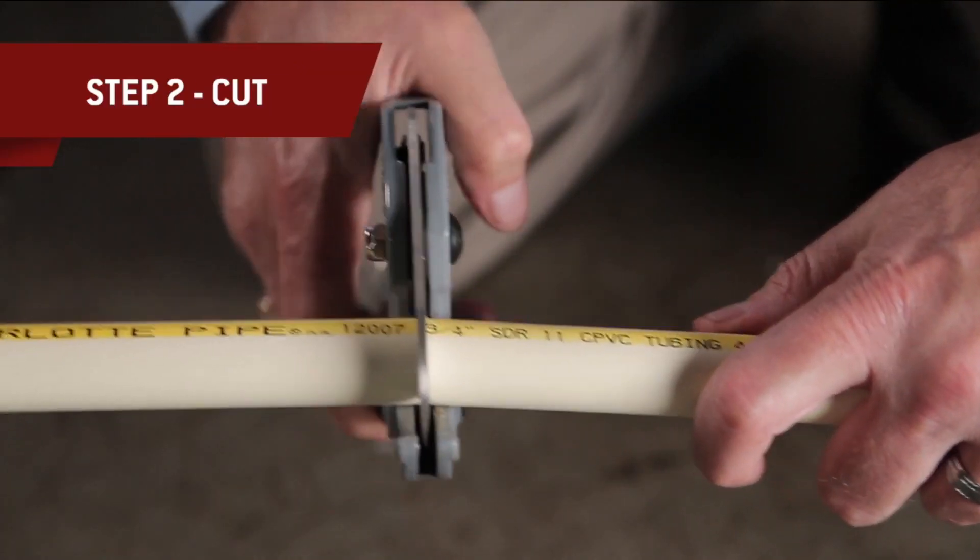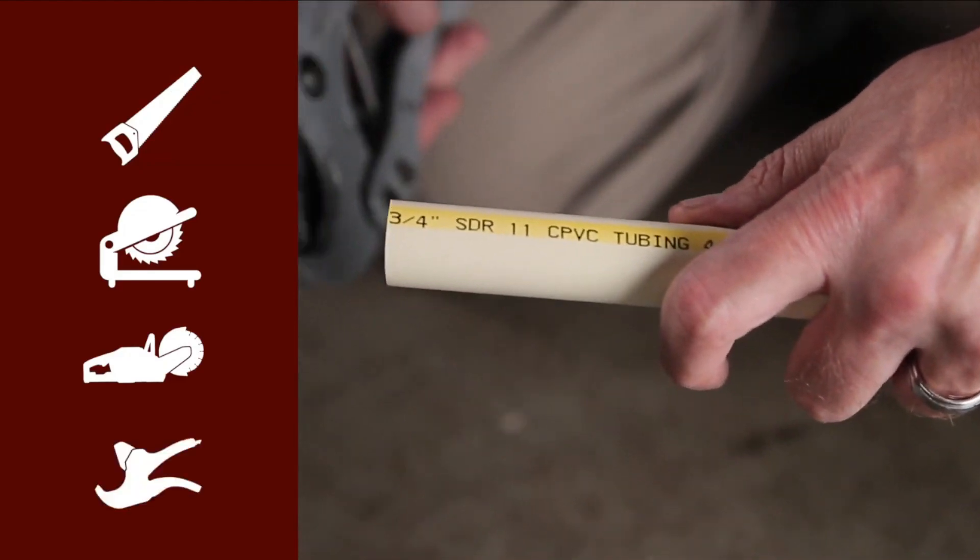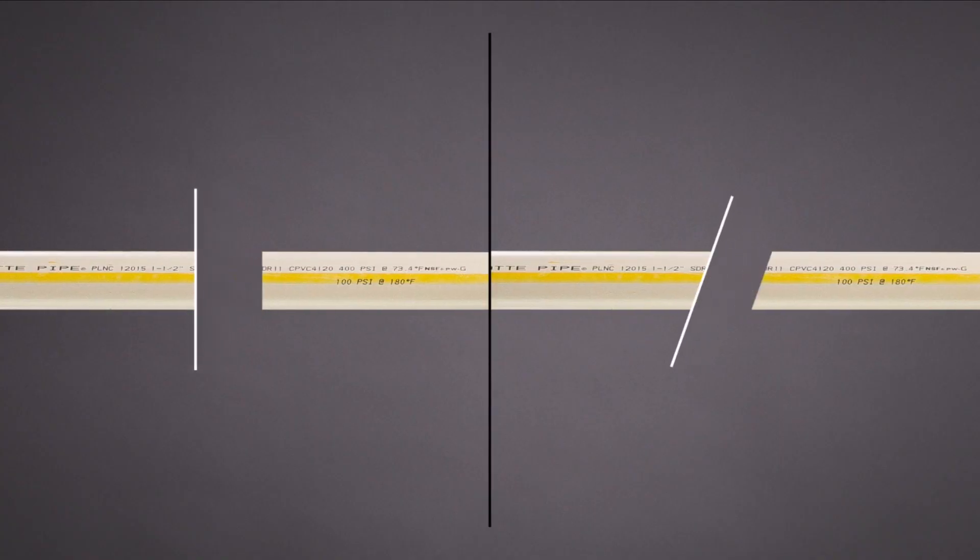There are a lot of ways to cut plastic pipe: hand saw, miter saw, cut off saw, and ratchet cutters. Whatever tool you use,